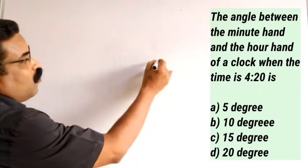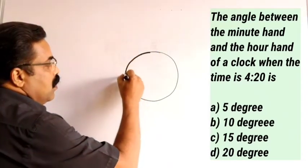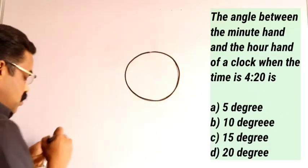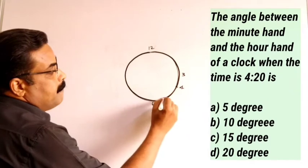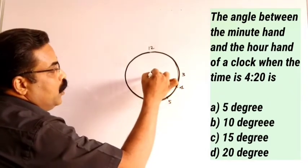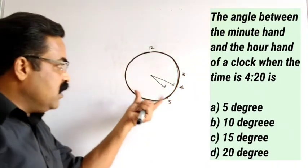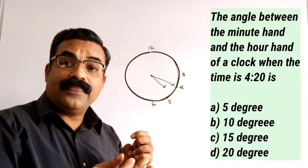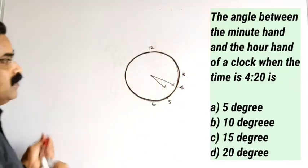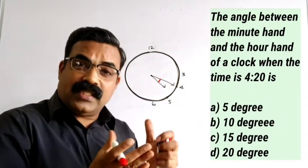When we talk about 4:20, the minute hand will be at 20 and the hour hand will be between 4 and 5. So this is 4:20. What is given in the question is: when the time is 4:20, what is the angle between the minute hand and the hour hand? We need to find out this angle.